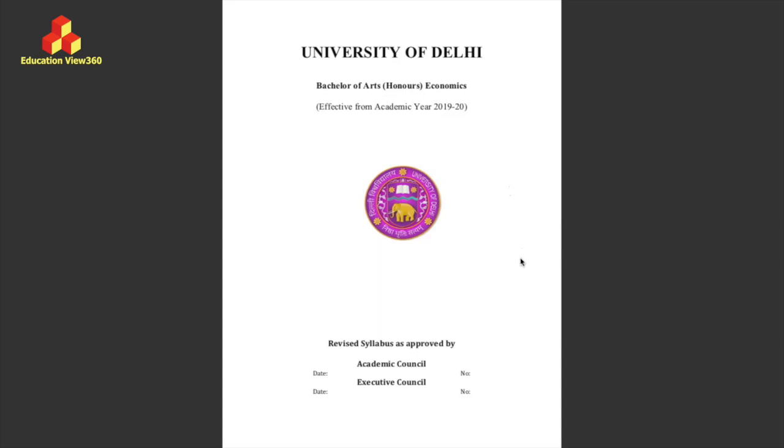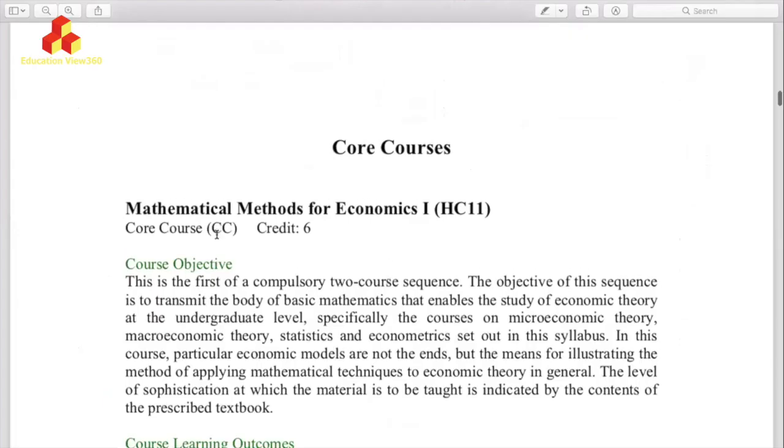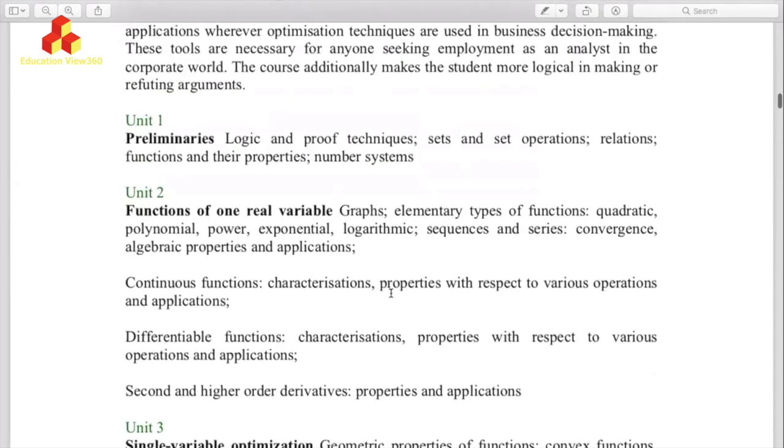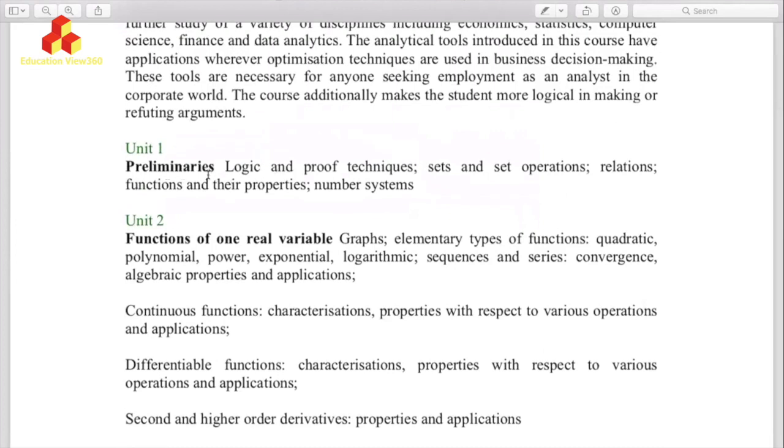So I want to give you some insights about economics honors, BA economics honors, and what level of math is involved, so that you will get the answer on your own. I'm going to take you to the course content. Now see this, the core courses. There is a subject called Mathematical Methods for Economics 1, which has 6 credits. If we look at the topics, what is studied in it: logic and proof techniques, sets and set operations, functions, relations and their properties, number system, then functions of one real variable, graphs, elementary type of functions - quadratic, polynomial, power, exponential, sequence and series, convergence.